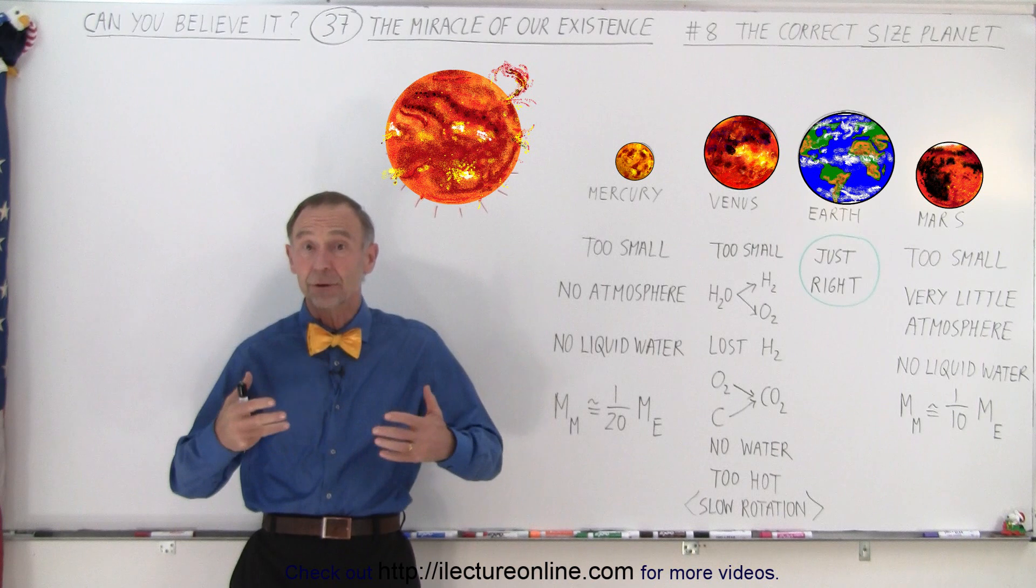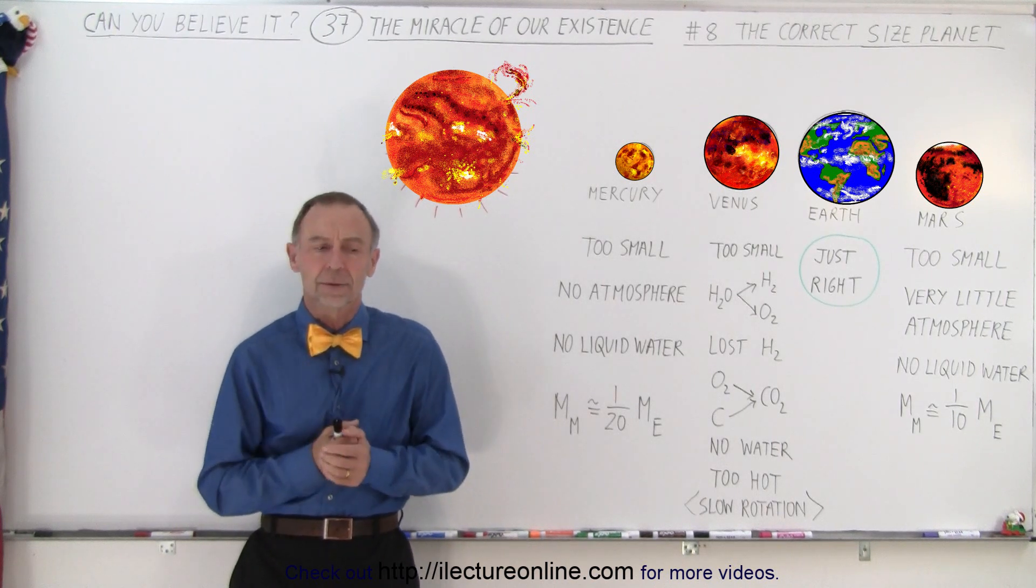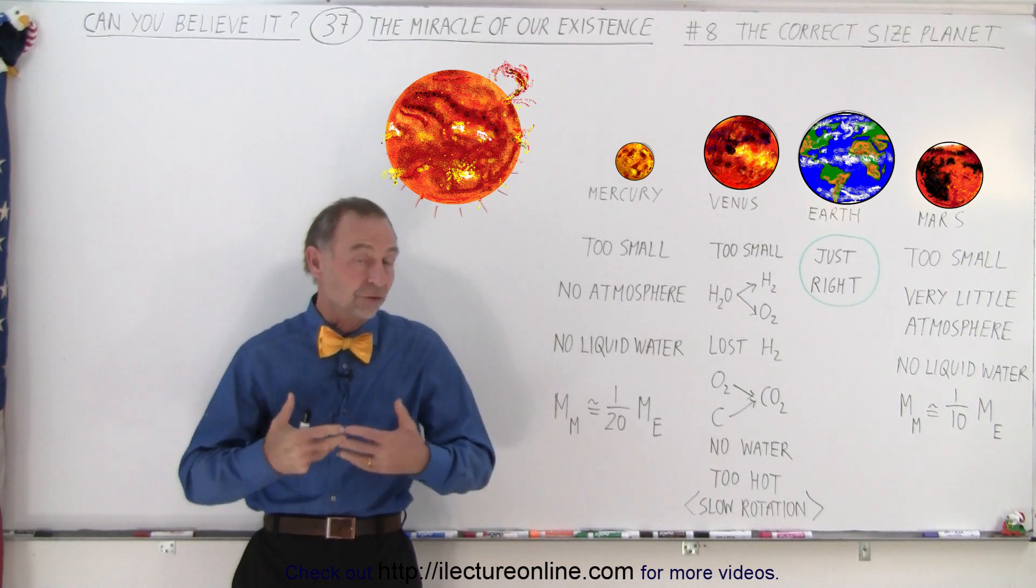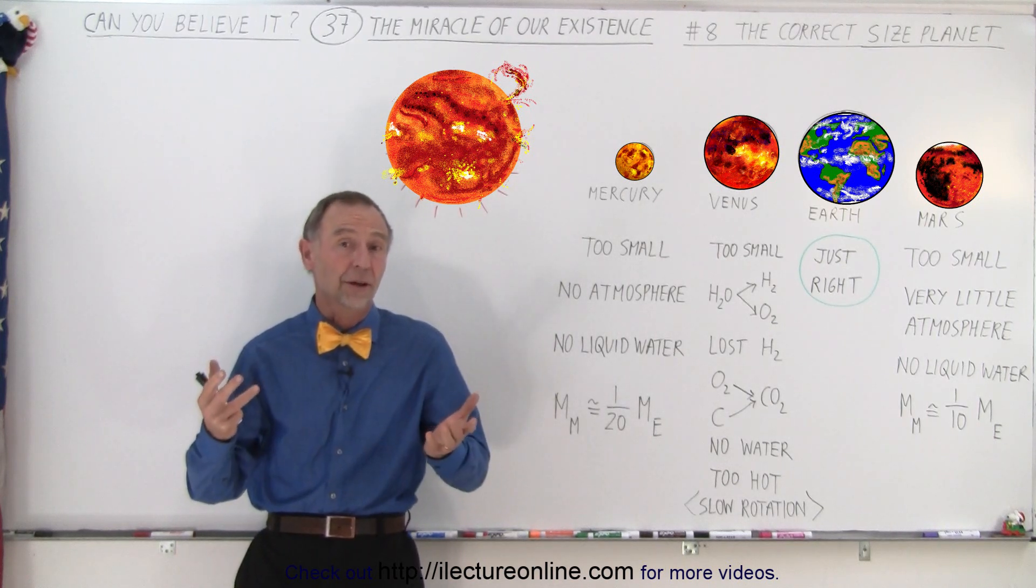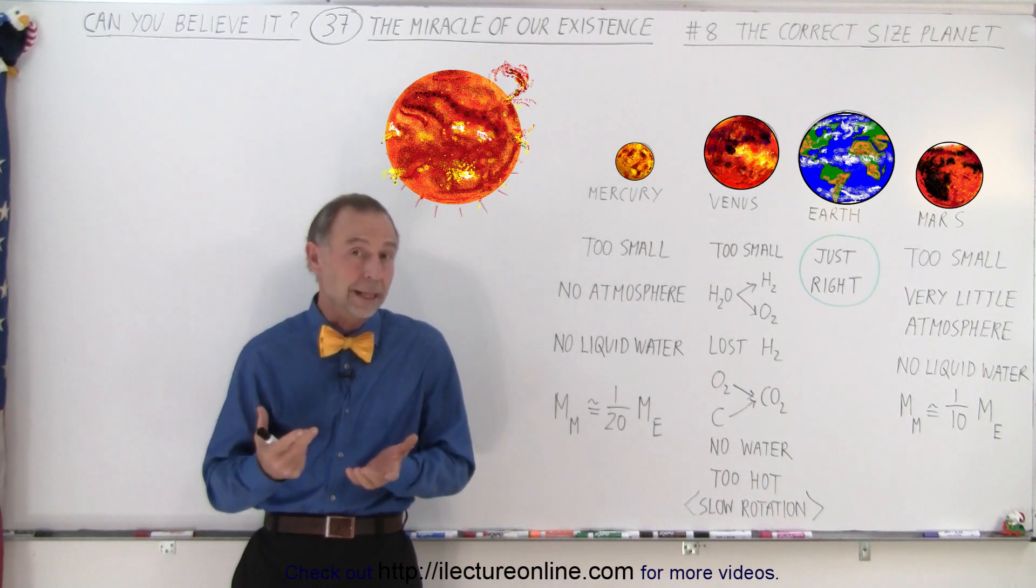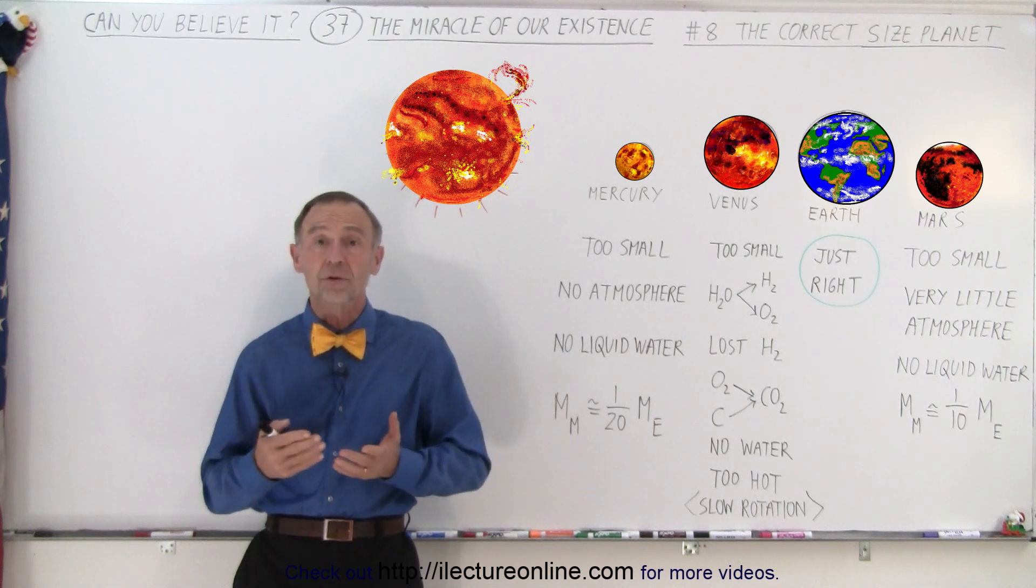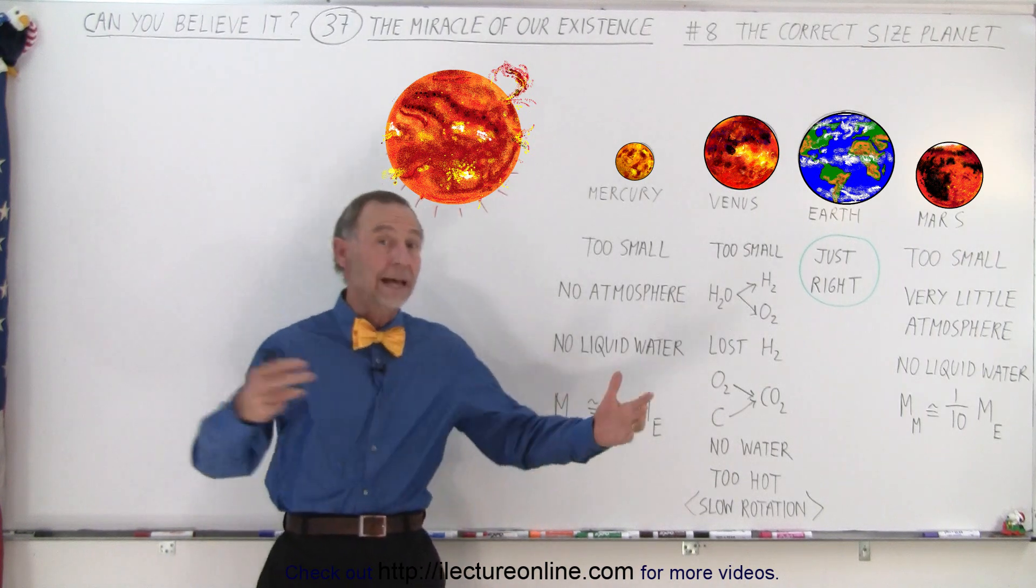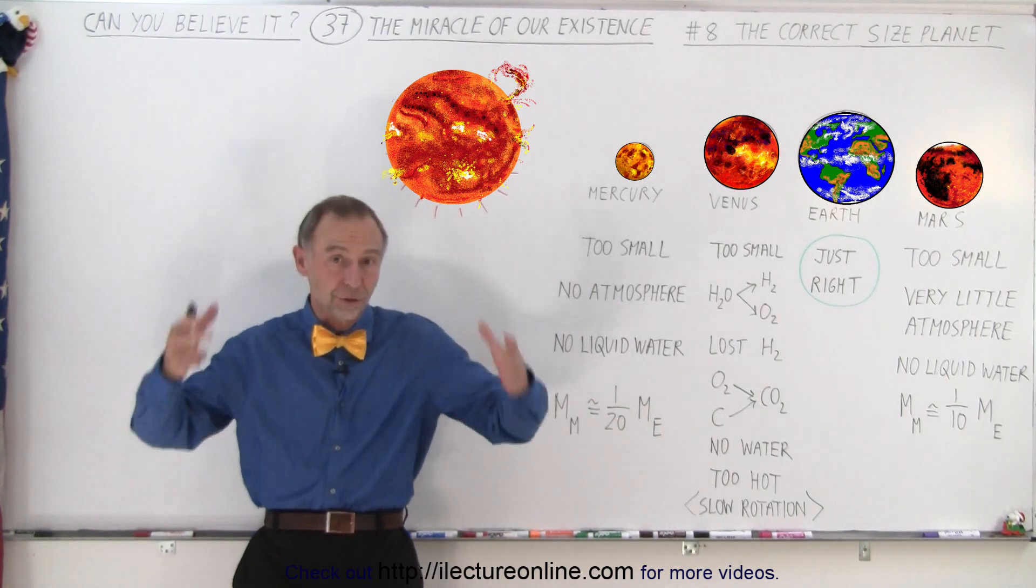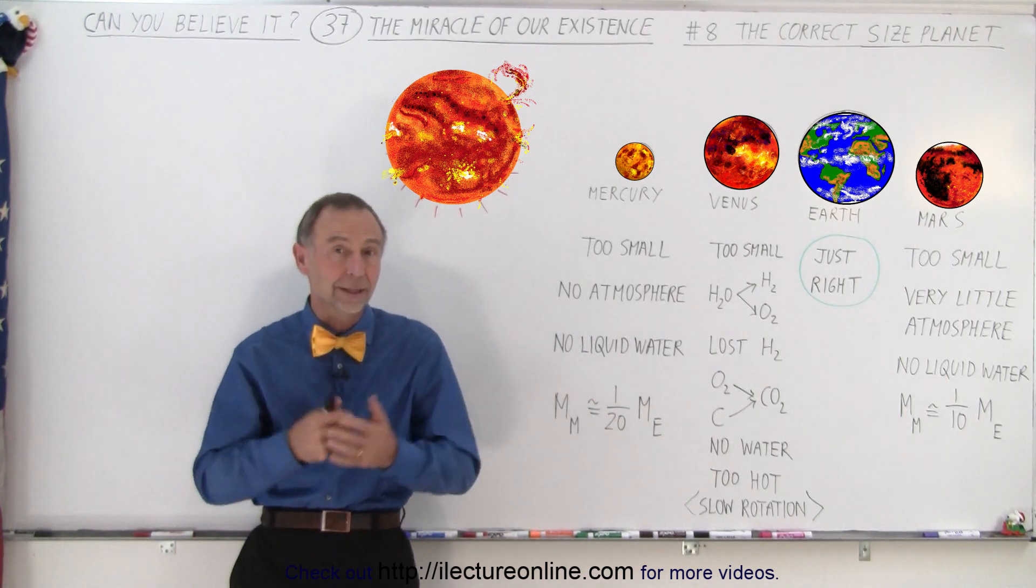We've talked about being near the correct star and being on a terrestrial planet. We've discovered that the vast majority of planets out there, hundreds of billions of planets, most of those are gas planets. A terrestrial planet is a planet you can actually walk on. A gas planet has no surface - you just kind of sink right into the planet trying to land on it.